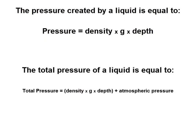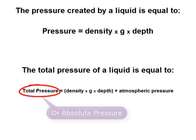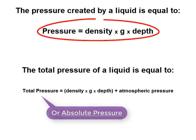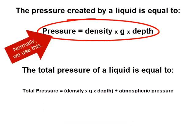The total pressure of a liquid is density times g times depth plus the pressure of the atmosphere. When this distinction is important, we use the term total pressure. Otherwise, our discussions of liquid pressure refer to pressure in addition to the normally ever-present atmospheric pressure.